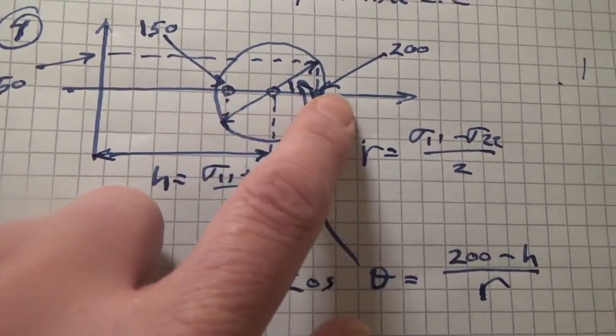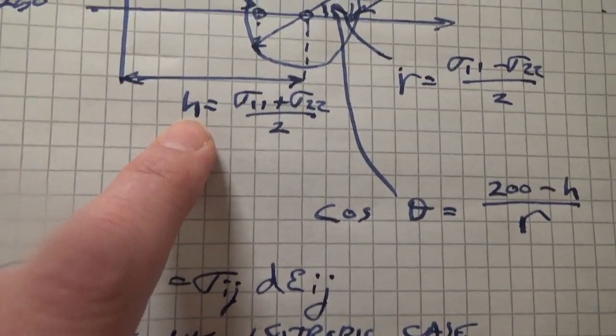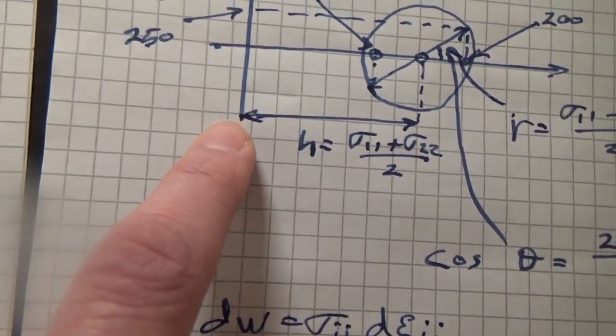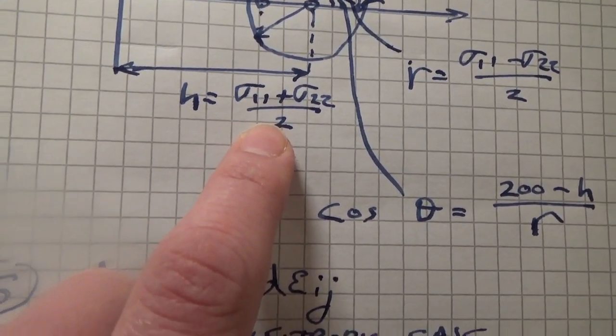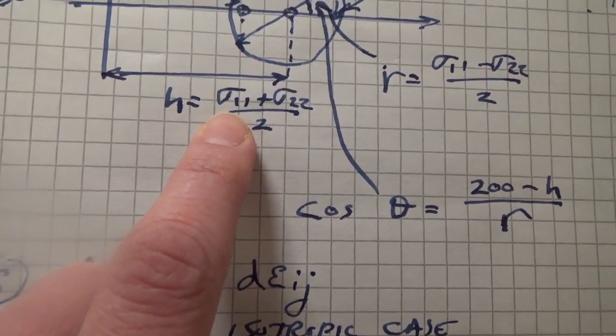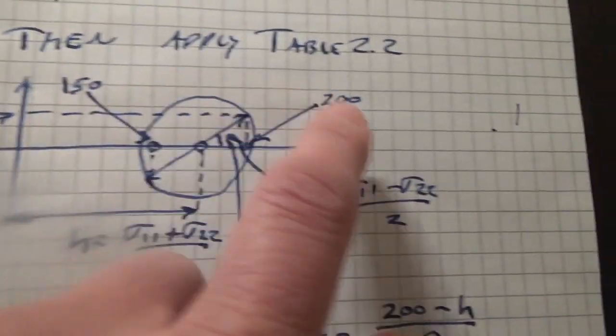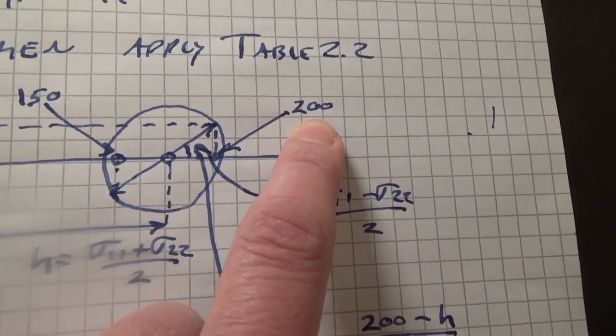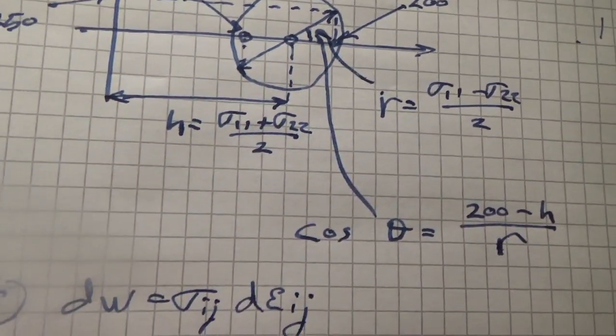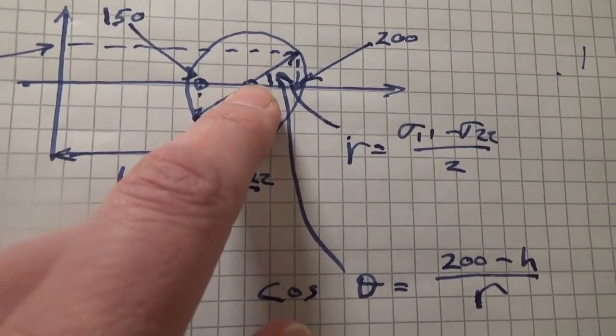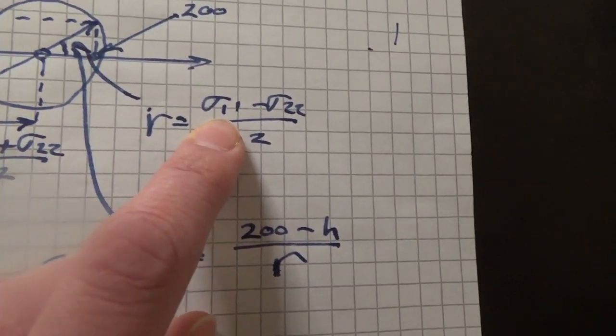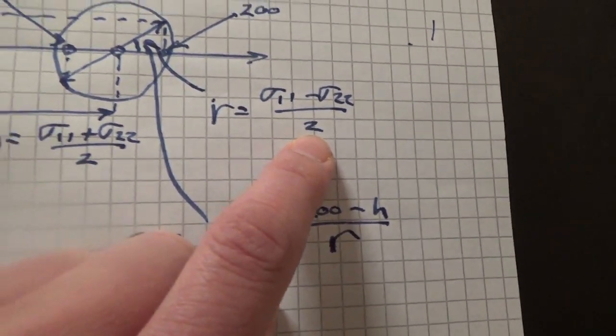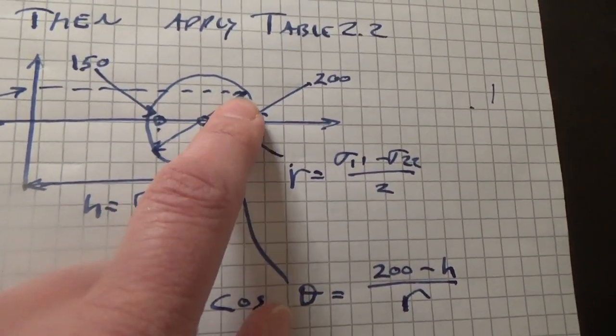Well, because we know it's a circle and we know these two points, that means that we know the distance from the origin to the center of the circle - that's h, and I gave those in the notes - so that's just the average of 150 and 200, so that's 175. And then we know the radius of the circle is sigma11 minus sigma22 over 2, and that will give you the radius.